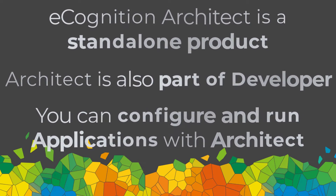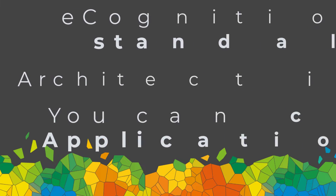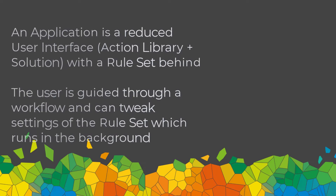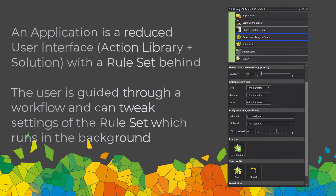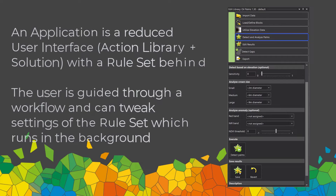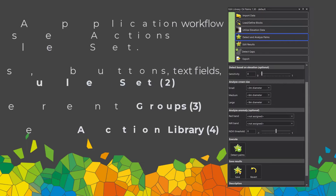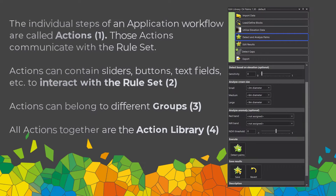If you have Architect, you can configure and run applications that were developed in eCognition Developer. This means you cannot create an application from a rule set using Architect — you can only open, execute, and configure an application already created by someone using eCognition Developer. An application is a reduced user interface including an action library and a solution, with a rule set running in the background.